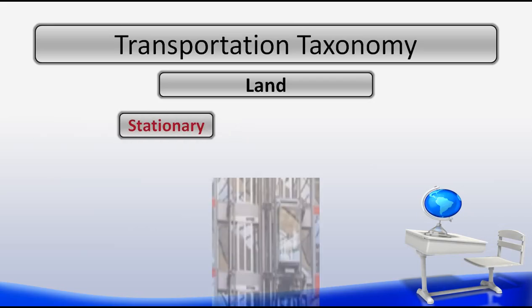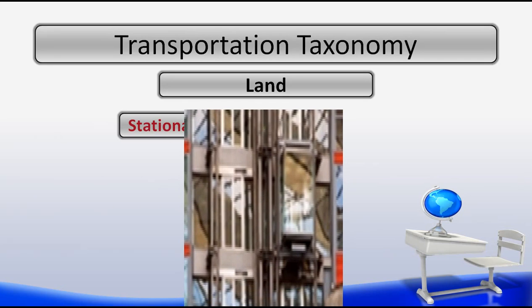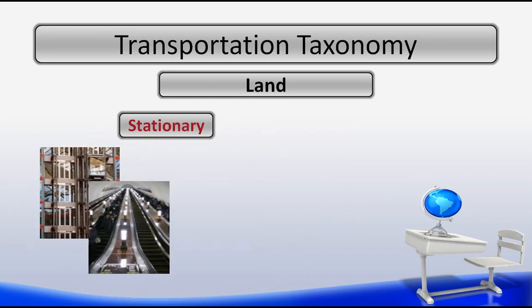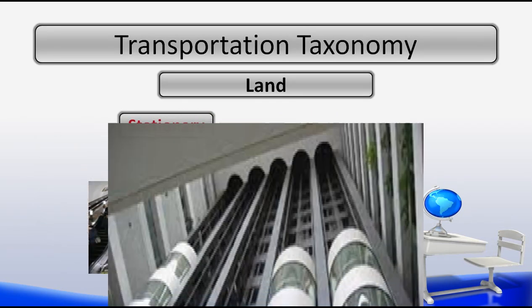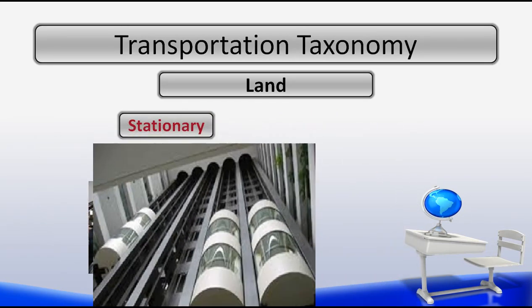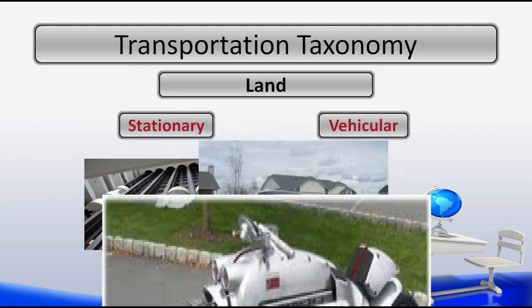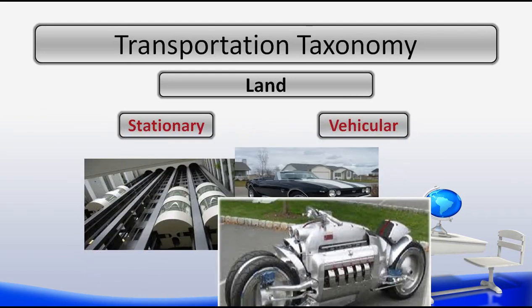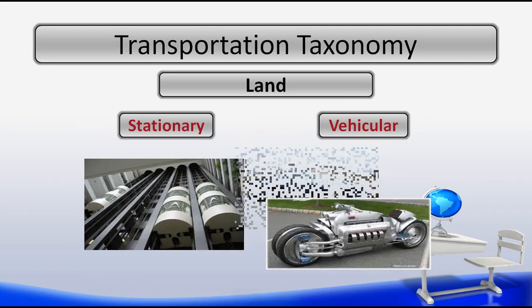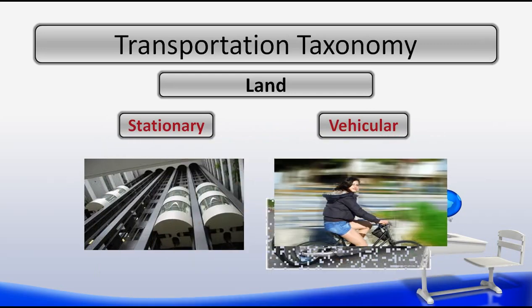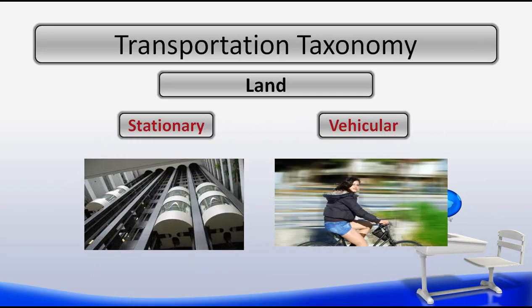Examples of land transportation based on stationary subsystems would include elevators, conveyor belts, escalators, and pipelines. Some examples of vehicular transportation would include cars, trains, bikes, motorcycles, skateboards, scooters, and many more.